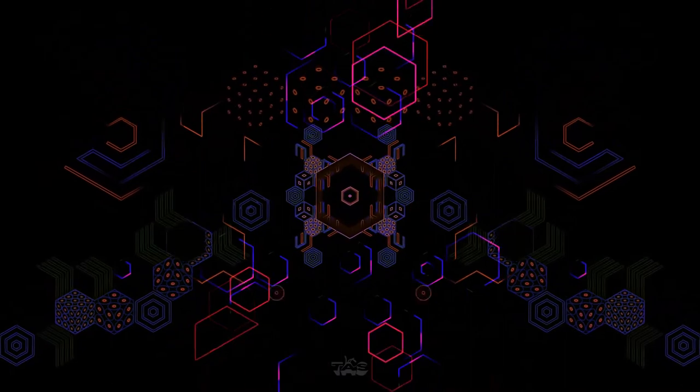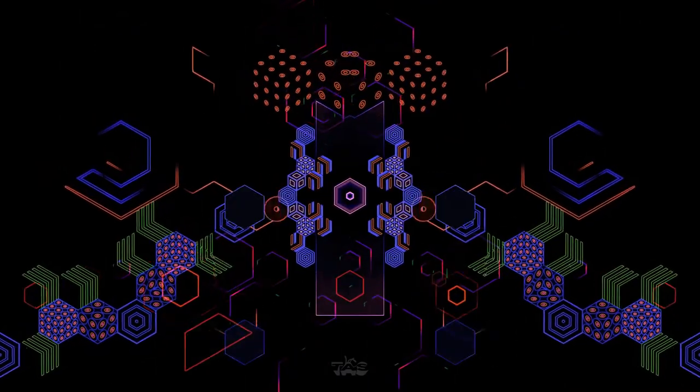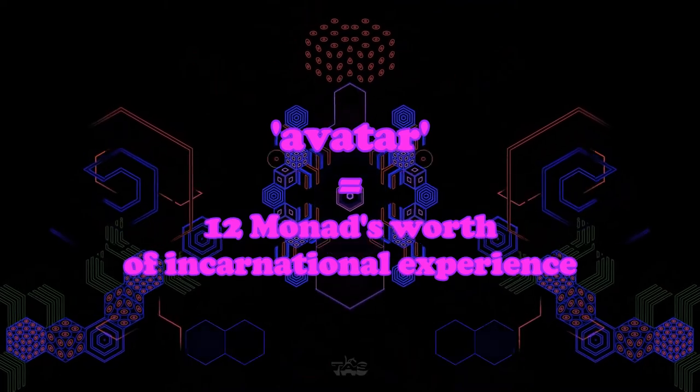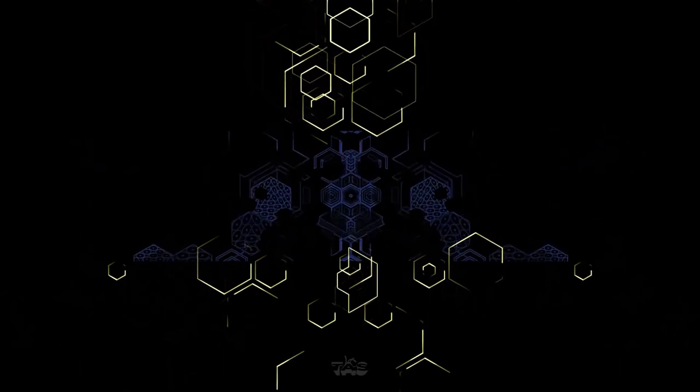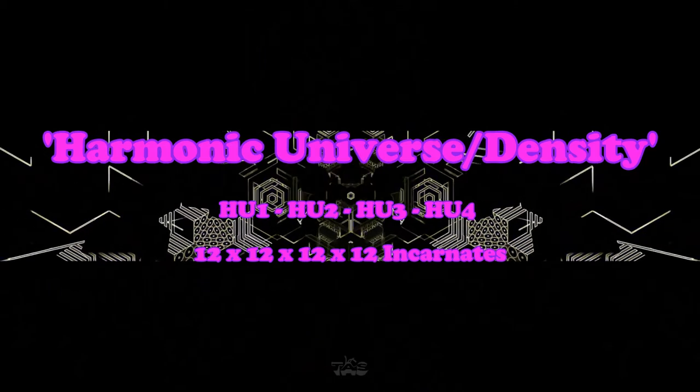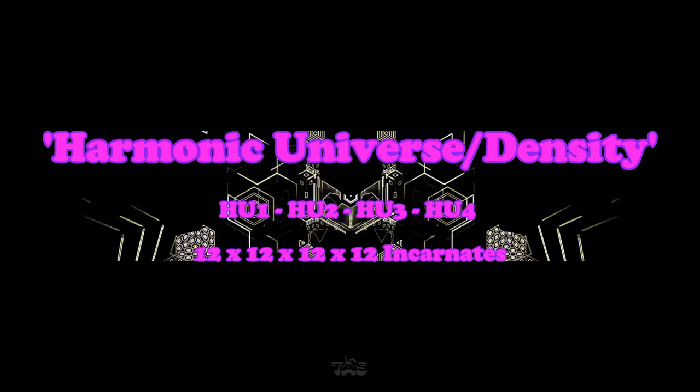Harmonic universe four, dimensions ten through twelve respectively, are the avatar harmonic universe, and mastering these levels of awareness requires completion of twelve harmonic universe three monad life cycles, each containing the twelve harmonic universe two that each contain the twelve harmonic universe one incarnates.